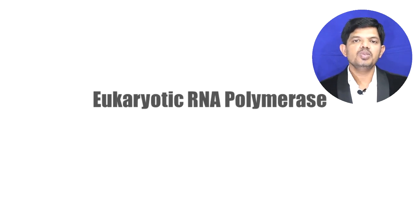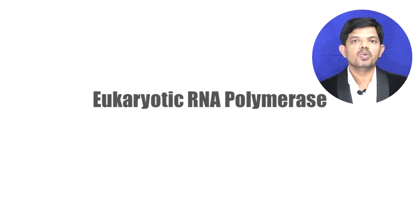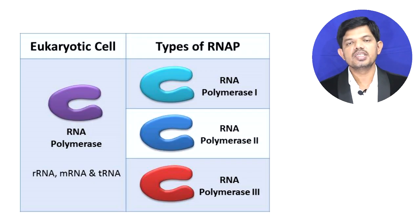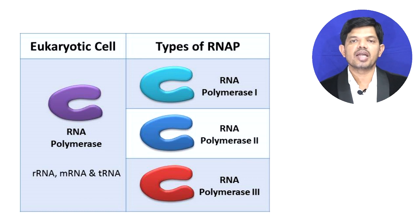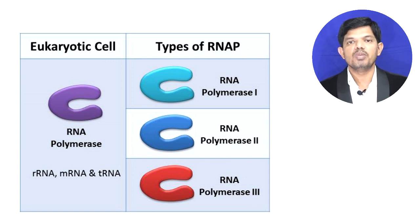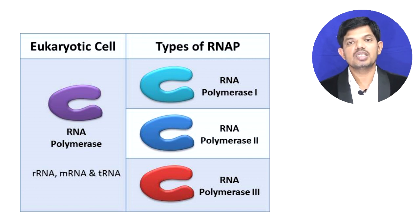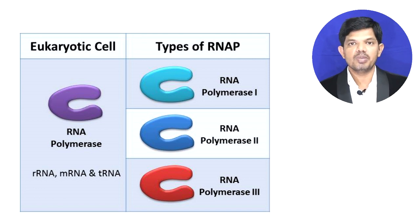Now coming to the eukaryotic cell. Eukaryotic cells have three different types of RNA polymerases. In animal cells there are RNA polymerase 1, RNA polymerase 2, and RNA polymerase 3. In the case of plants, RNA polymerase 4 is also found.